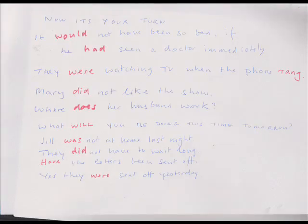Now it's your turn. Let's look at these sentences and you tell me what the tense is. 'It would not have been so bad' — Mechthild? 'Would' is conditional; 'have been' is perfect — conditional perfect. Yes, you can also say conditional two. What about Jacques? 'If he had seen a doctor immediately' — 'had' is red and past, combined with 'seen' we have past perfect. Very good.